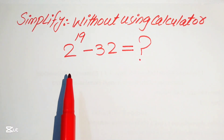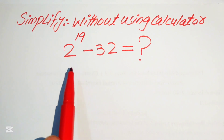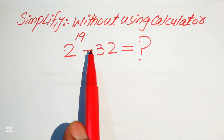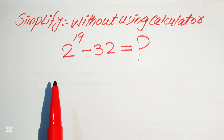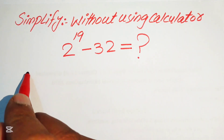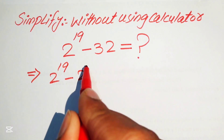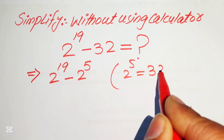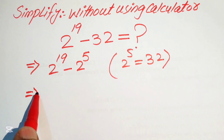Hello everyone. How to simplify this nice algebraic expression into the lowest form? We have 2 to the power of 19 minus 32. Here we can simplify this expression without using the calculator — the calculator is not allowed to solve this problem. First, we write 32 in prime factors form, as 2 to the power of 5, since 2 to the power of 5 equals 32.